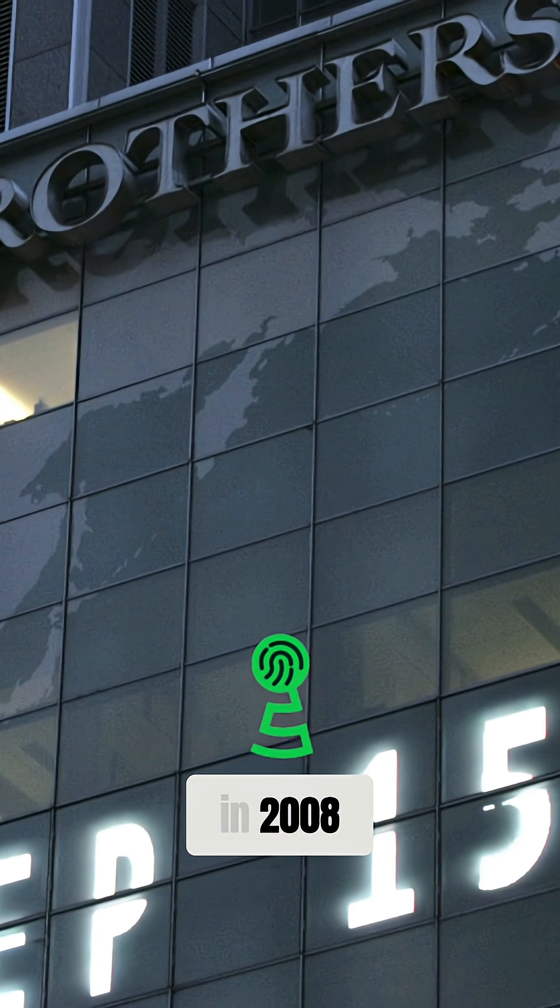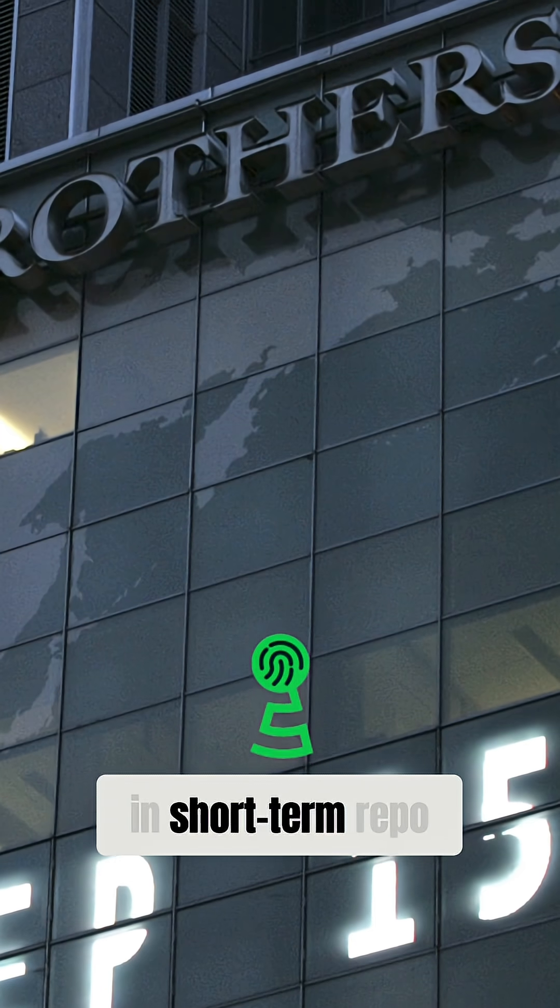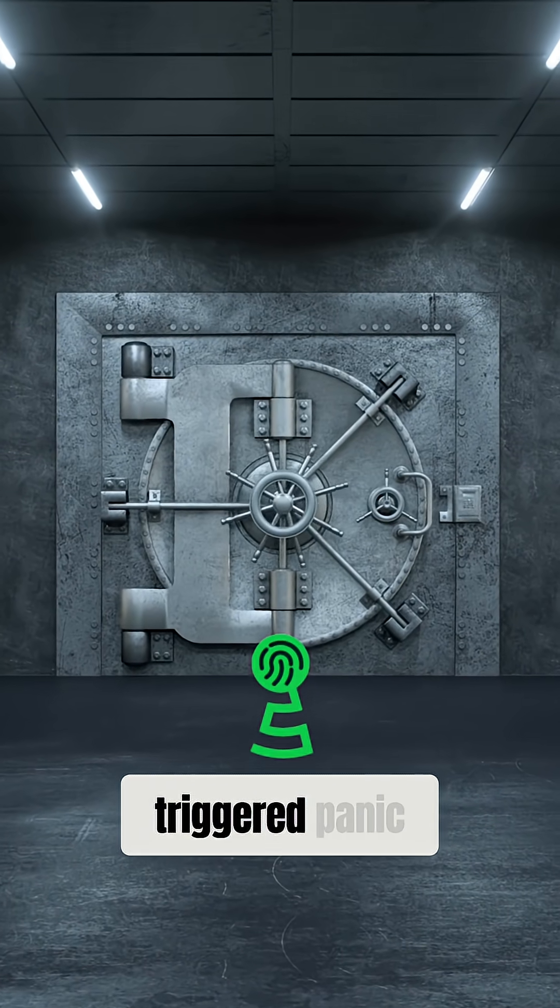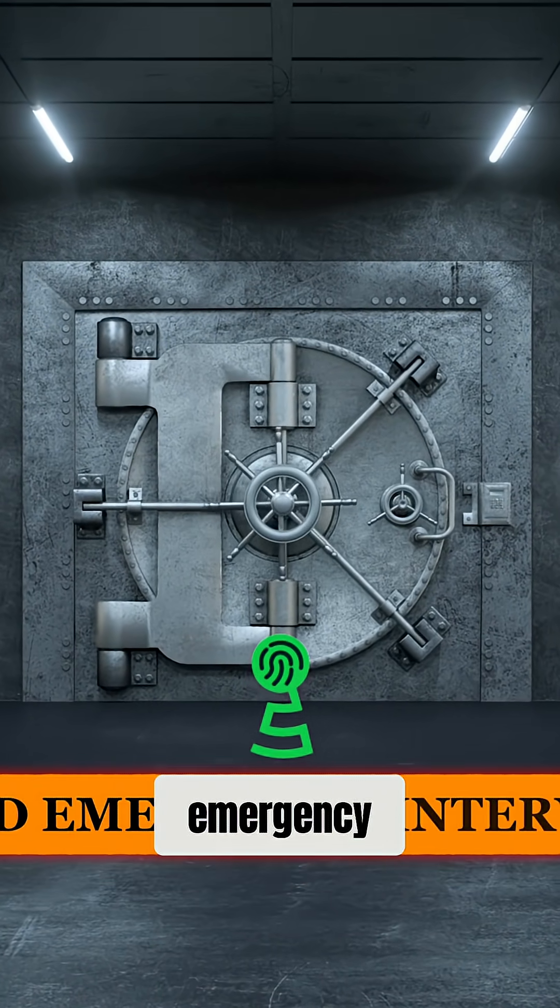When Lehman Brothers collapsed in 2008, it was the freeze in short-term repo lending, a core shadow banking activity, that triggered panic across markets and forced emergency intervention.